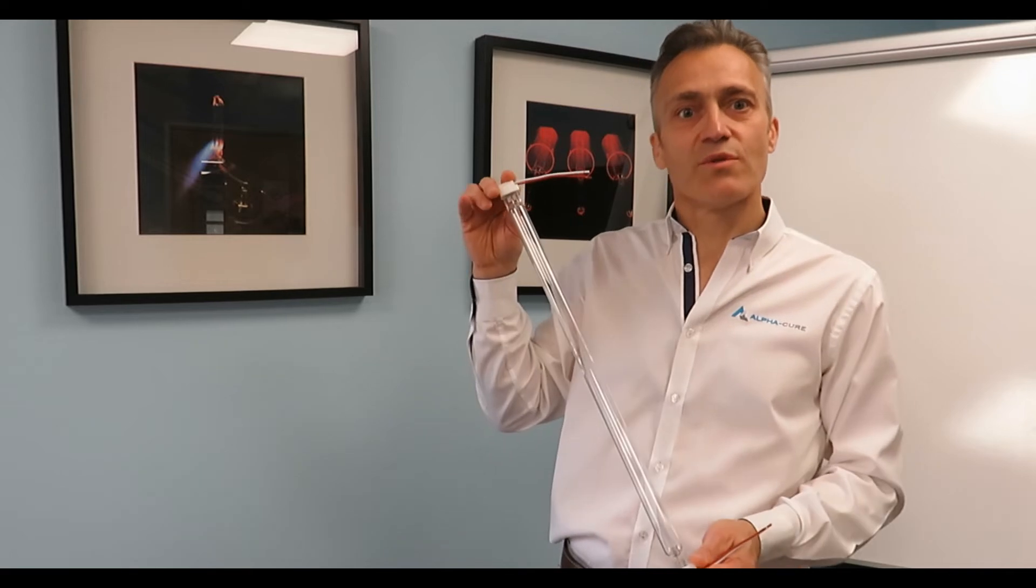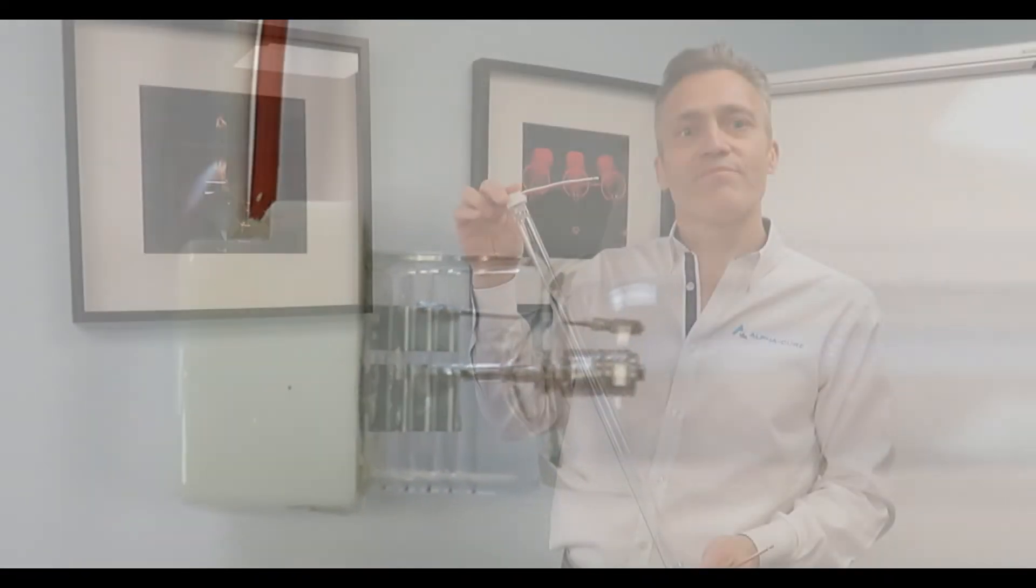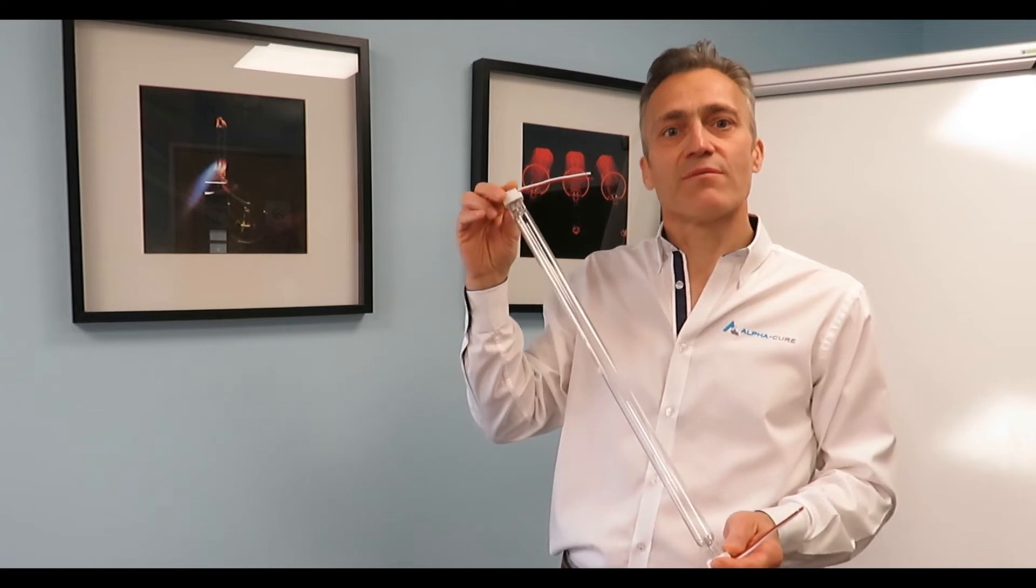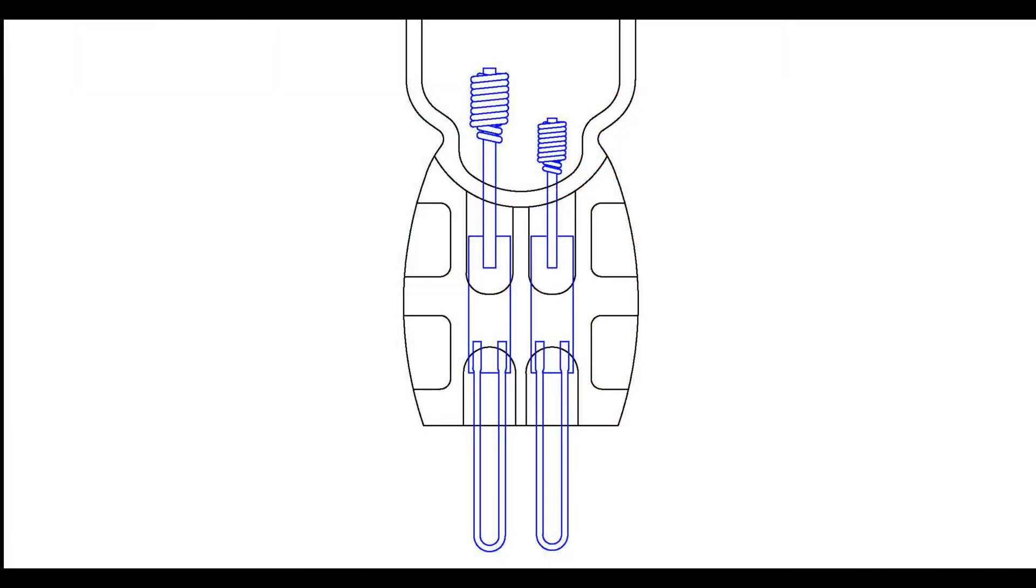Therefore, at AlphaCure we have developed the 4.0 lamp which has two electrodes, as you can see in the lamp here. The idea here is that we can select the electrode to have optimum efficiency at both the high and extremely low power required for the standby setting.